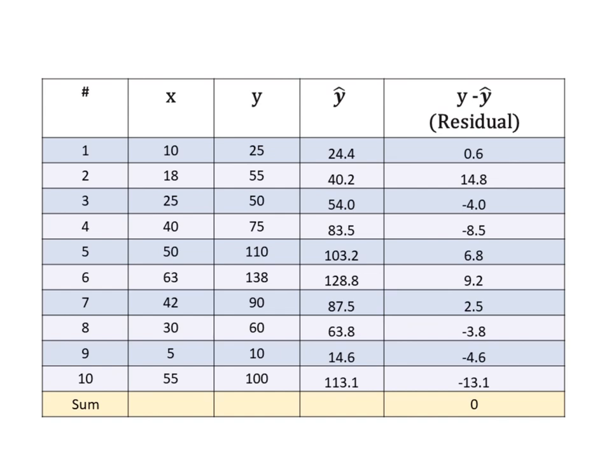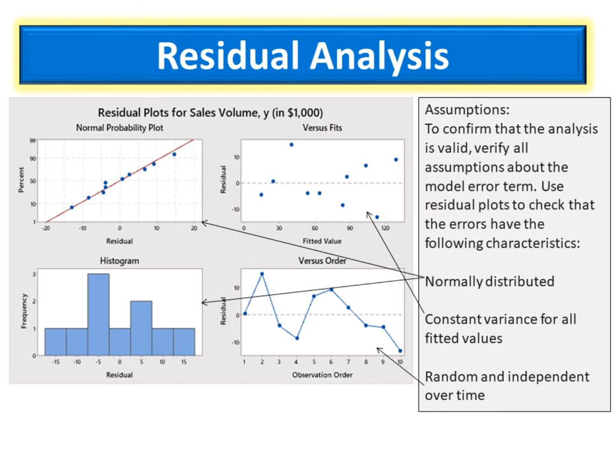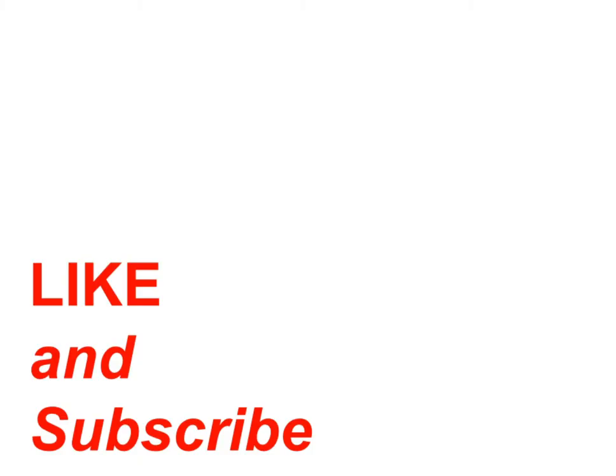In this example, the residual or error fulfills the three assumptions of normally distributed, constant variance for all fitted values, and random and independent over time. There will be a series of videos for regression analysis. Remember to subscribe to my channel so that you will not miss out on my next videos. See you next time!